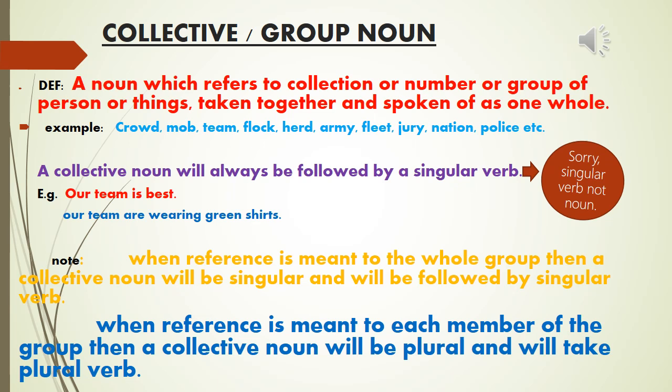An important note: a collective noun will always be followed by a singular verb. For example, 'Our team is best' — here 'team' is a collective noun followed by the singular verb 'is.' But what about 'Our team are wearing green shirts'? Here 'team' is also a collective noun but is followed by the plural verb 'are.' Stay with me — I will resolve this confusion.